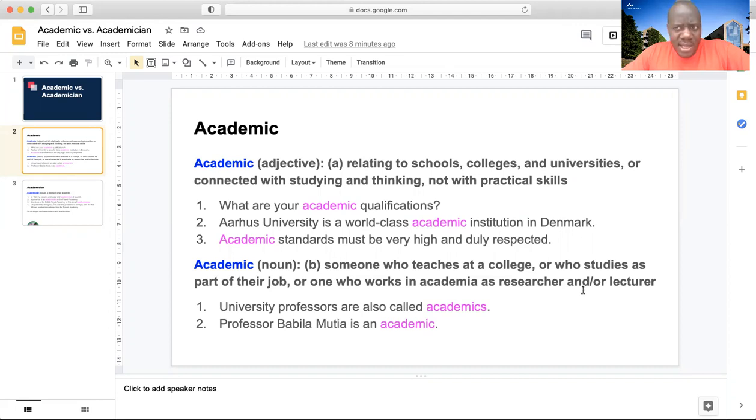So, if someone is a university professor, you will call him an academic, not an academician. For example, university professors are also called academics.